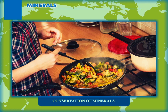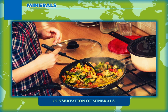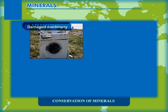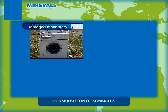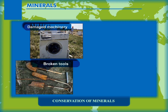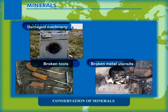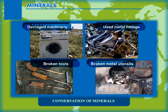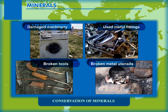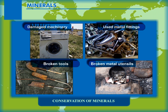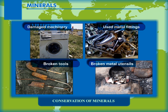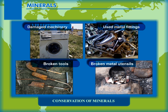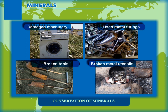The best examples of reusable items are metal parts and objects such as old and damaged machinery, broken tools, broken metal utensils, and used metal fittings such as clips, brackets, etc. All these can be repaired, painted, and maintained to be successfully reused.